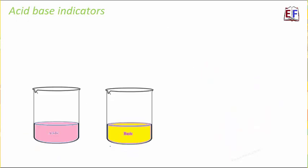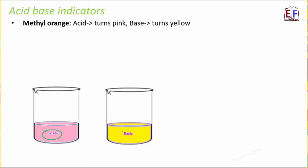We also have methyl orange, which behaves differently with an acid and a base. In acidic solution, it turns pink, and in basic solution, it turns yellow. I have put these pictures here so that it becomes easy to get a perception of how the color change happens. So till now, we have spoken about so many acid-base indicators where a color change tells you whether the substance is acidic or basic in nature.